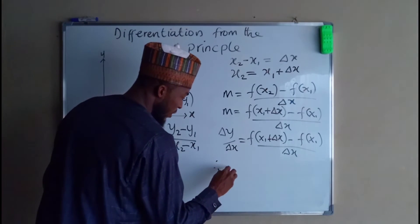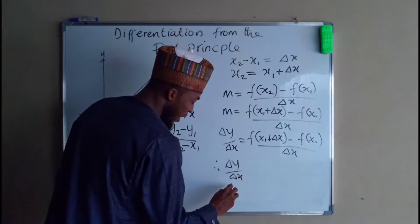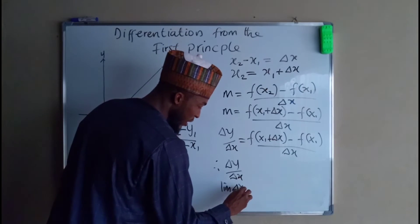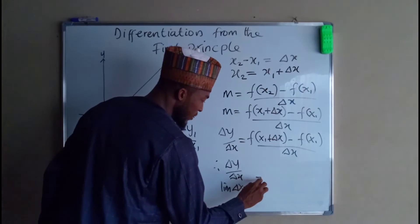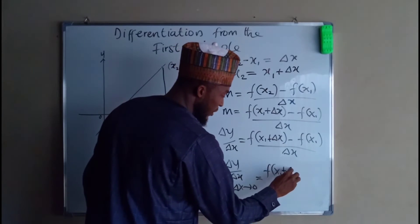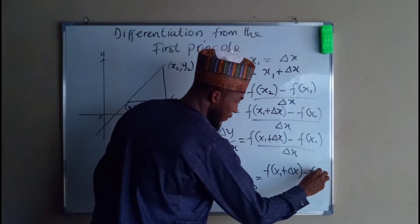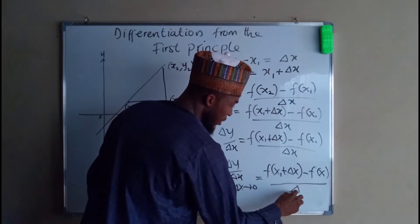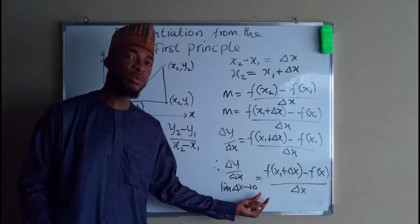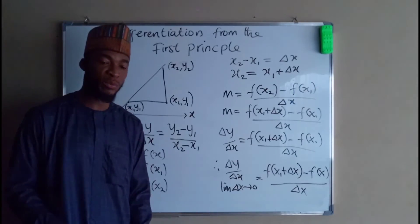Therefore, dy — or change in y divided by change in x — as the limit of dx approaches 0, is equal to f of x1 plus dx minus f of x1, divided by dx. So this is the formula you are going to be using in order to find the derivative of a function from the first principle.